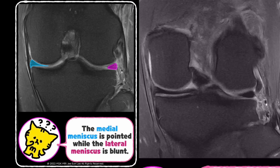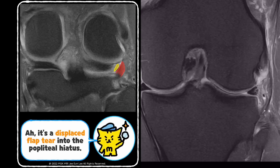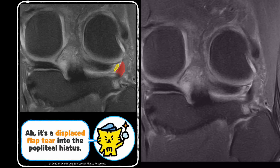In such cases, it's crucial to carefully evaluate any displaced meniscal fragments. On the posterior coronal image, we can see the popliteal tendon coursing through the popliteal hiatus. But between the lateral meniscus and the popliteal tendon, there's a small low signal structure — this represents a displaced flap tear extending into the popliteal hiatus.